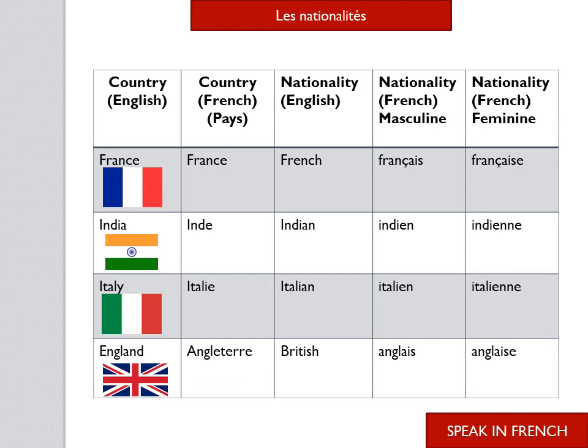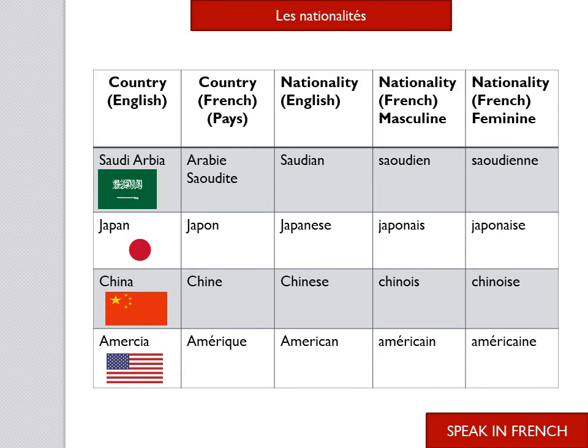Next is England — in French, we say Angleterre. The nationality in English is British. In French, we say anglais for masculine, and apply the rule of adding 'e' for the feminine: anglaise. Next is Saudi Arabia — in French, we say Arabie Saoudite. The nationality is Saudi, and in French the masculine nationality is saoudien, and the feminine nationality is saoudienne.